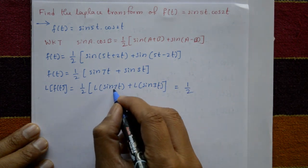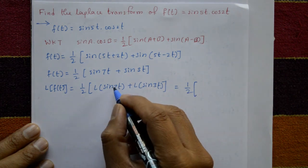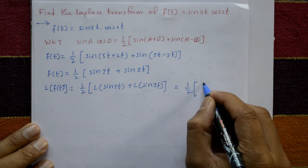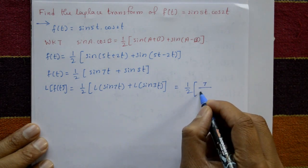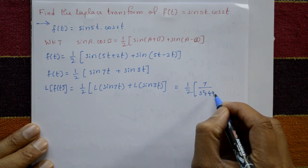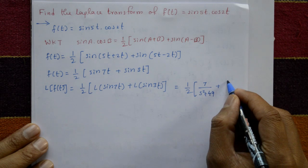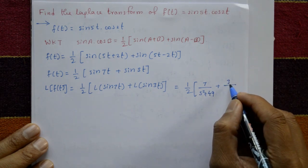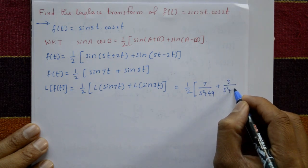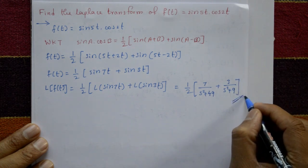Using the standard formula L{sin(at)} = a/(s²+a²), we get L{f(t)} = (1/2)[7/(s²+49) + 3/(s²+9)]. This is the required solution.